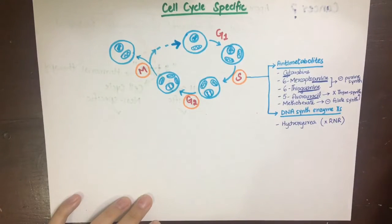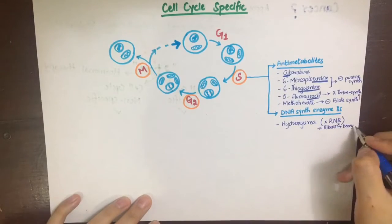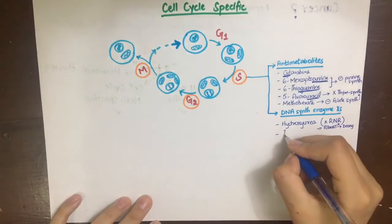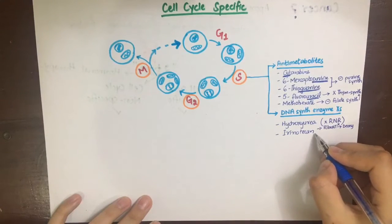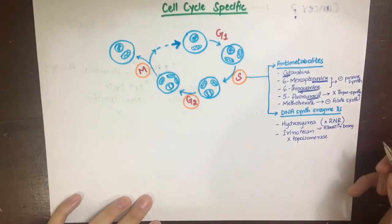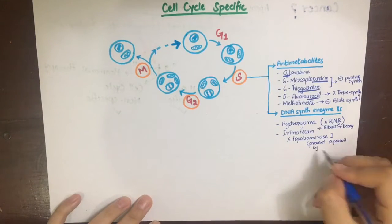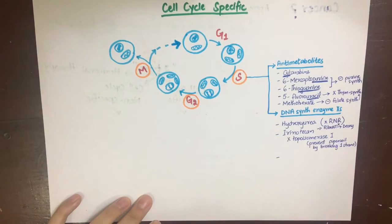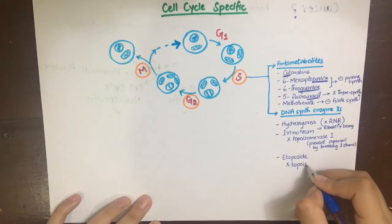The second group acting on the S phase are DNA synthesis enzyme inhibitors. Hydroxyurea inhibits the enzyme ribonucleotide reductase, which converts ribonucleotides into deoxyribonucleotides. Another drug inhibits topoisomerase 1, which relieves supercoils in DNA produced by helicase when it unwinds the DNA — topoisomerase 1 cuts one strand while topoisomerase 2 cuts both strands. Topoisomerase 2 is inhibited by etoposide.